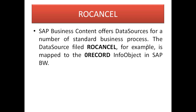For example, when fetching data from an SAP R/3 system through a data source, you activate the data source in SAP BW content. Every data source in SAP Business Content has a standard field called RO Cancel, which is automatically available. This field can be mapped with the zero record mode info object in SAP BW, ensuring that the data aligns between your SAP R/3 system and your BW system.